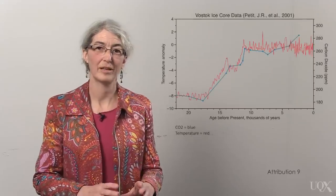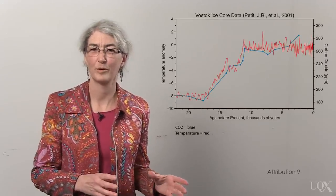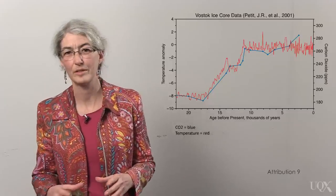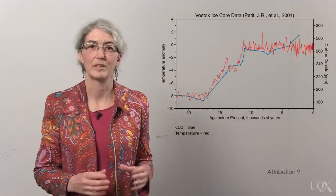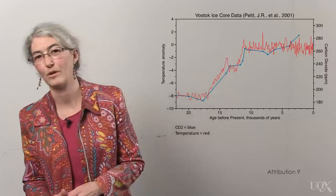When we zoom in on that range in the Vostok core, we can see that Antarctica apparently started warming before carbon dioxide increased. This observation connects to the myth that temperatures rose before CO2, so CO2 can cause warming.